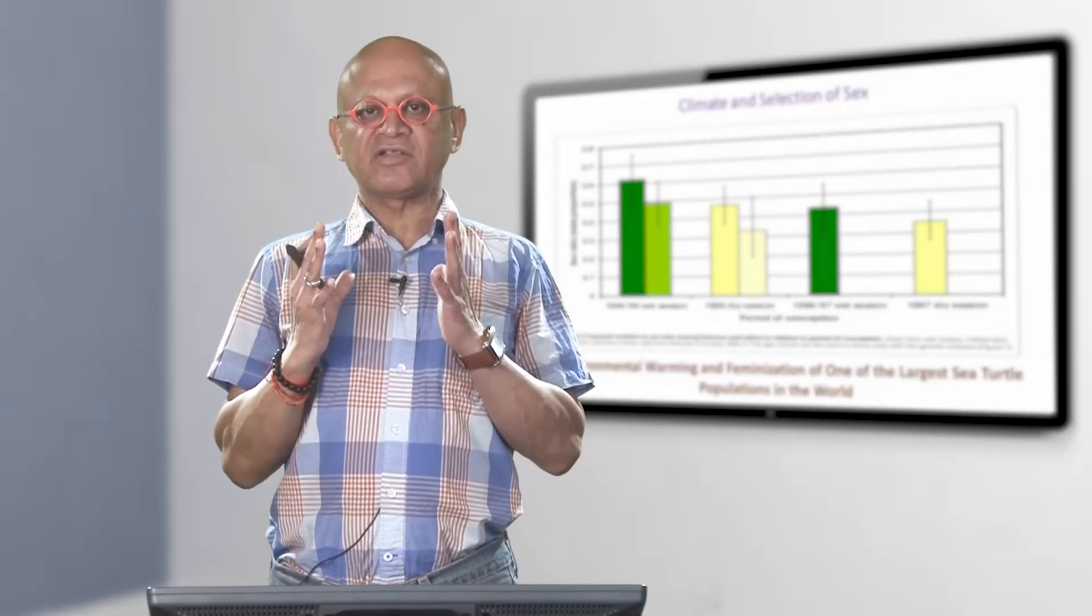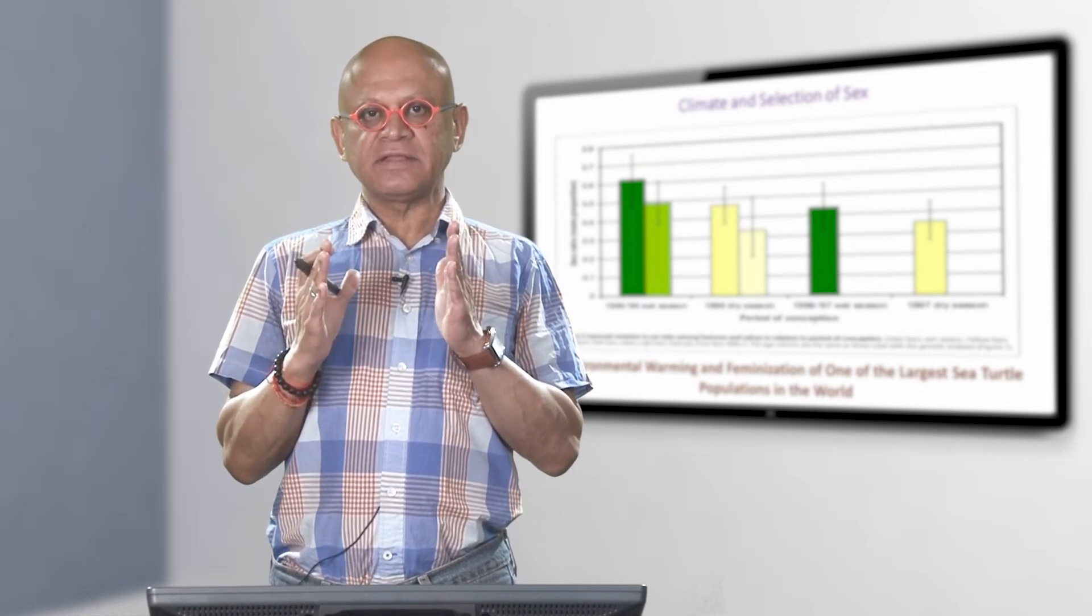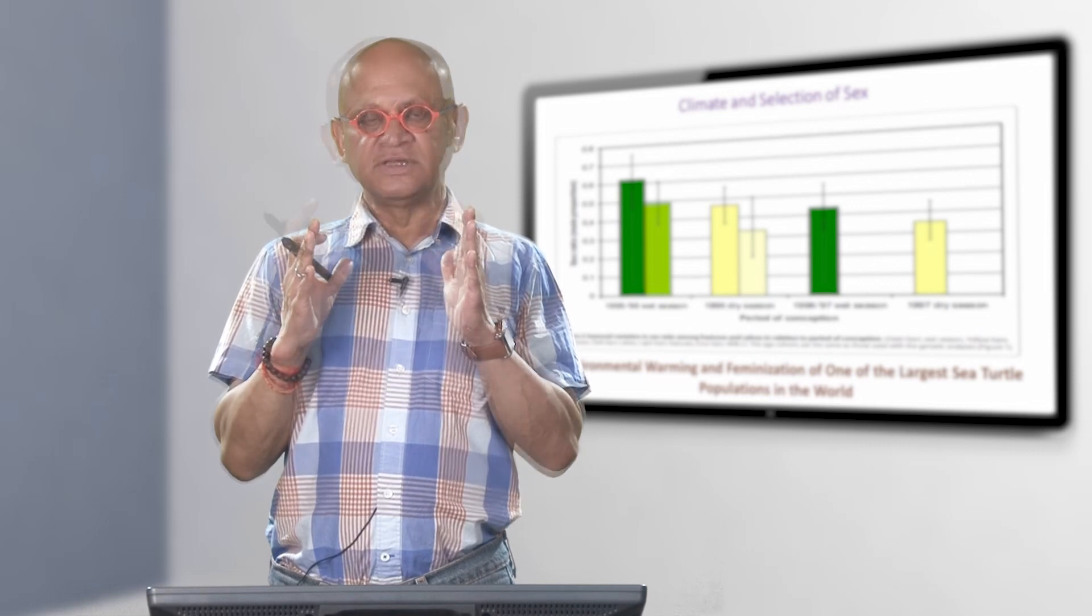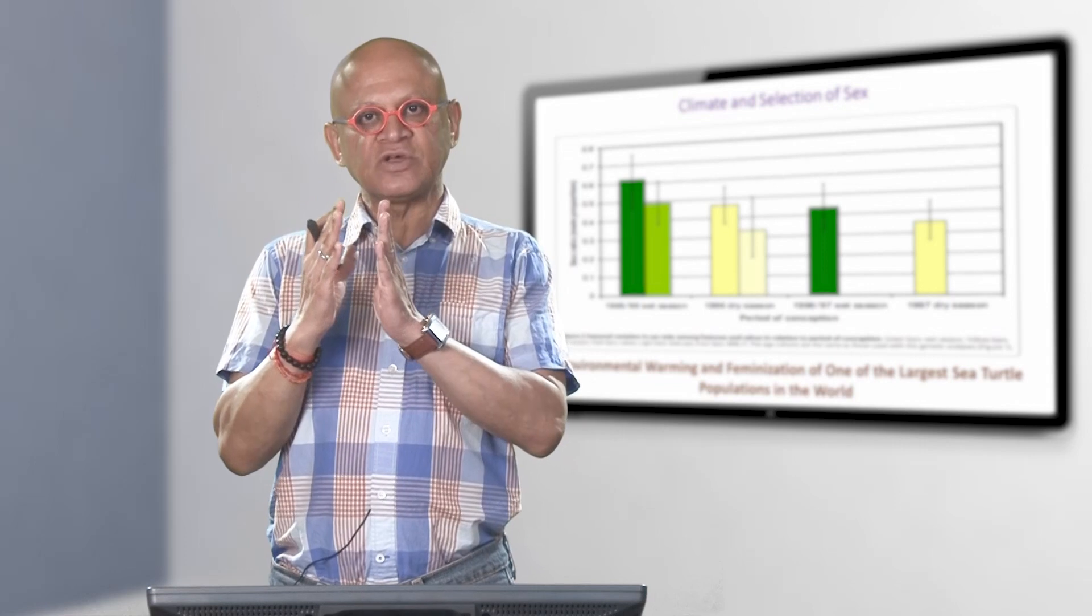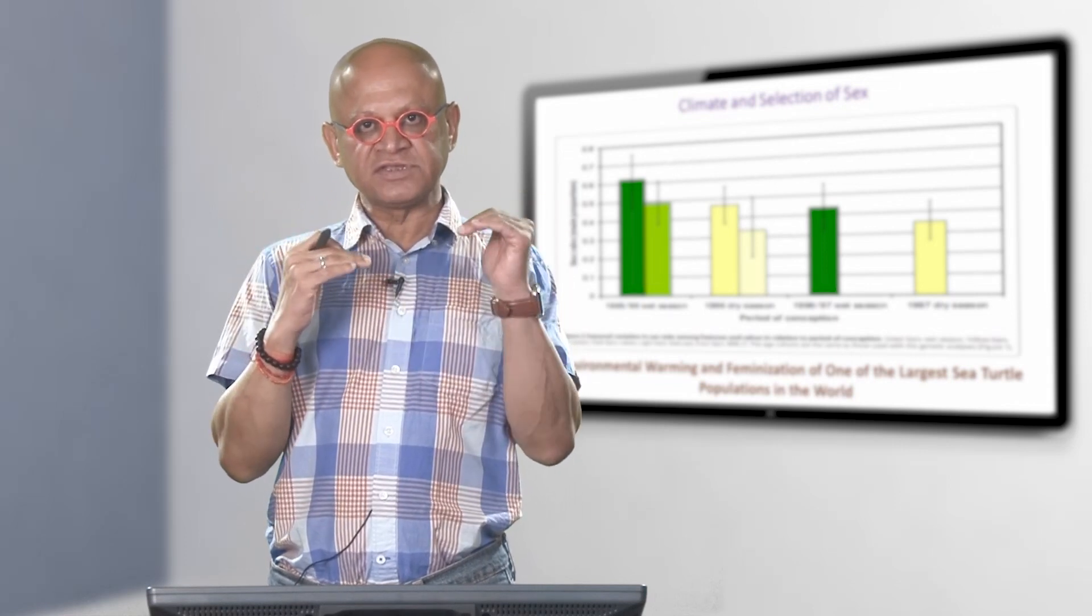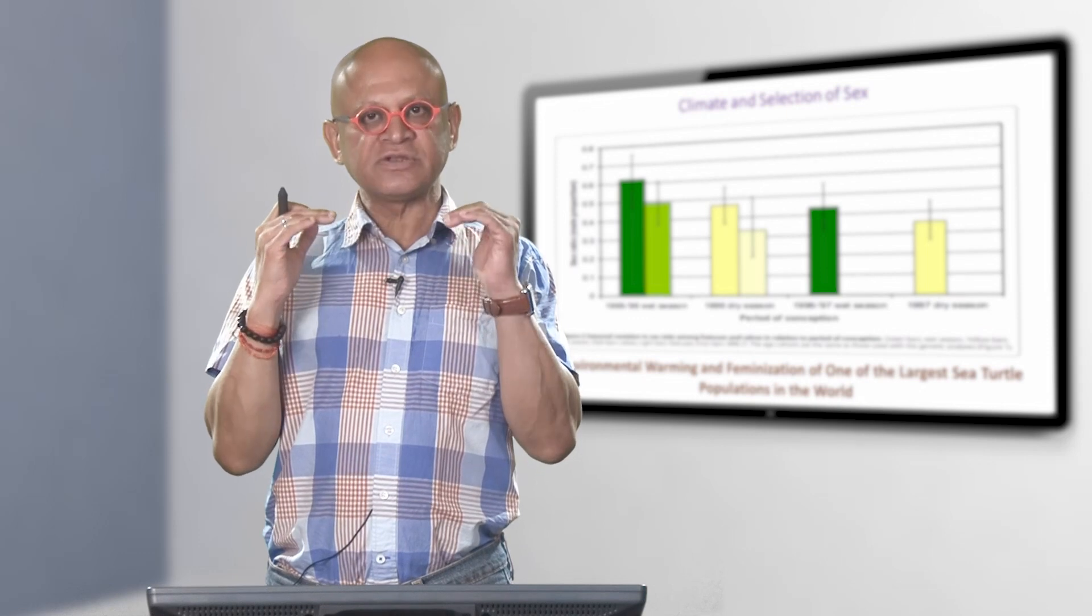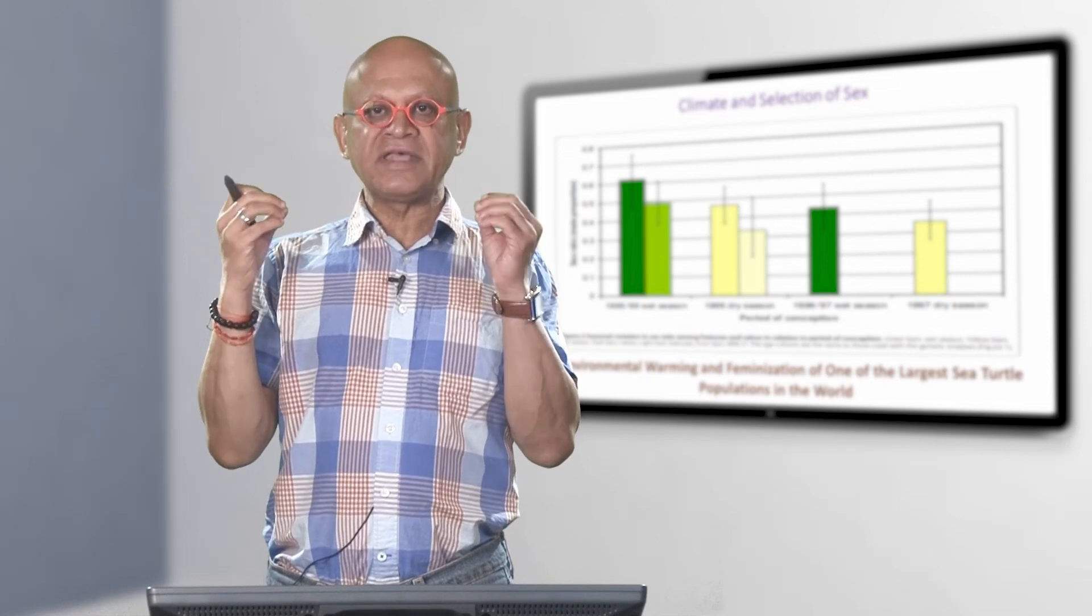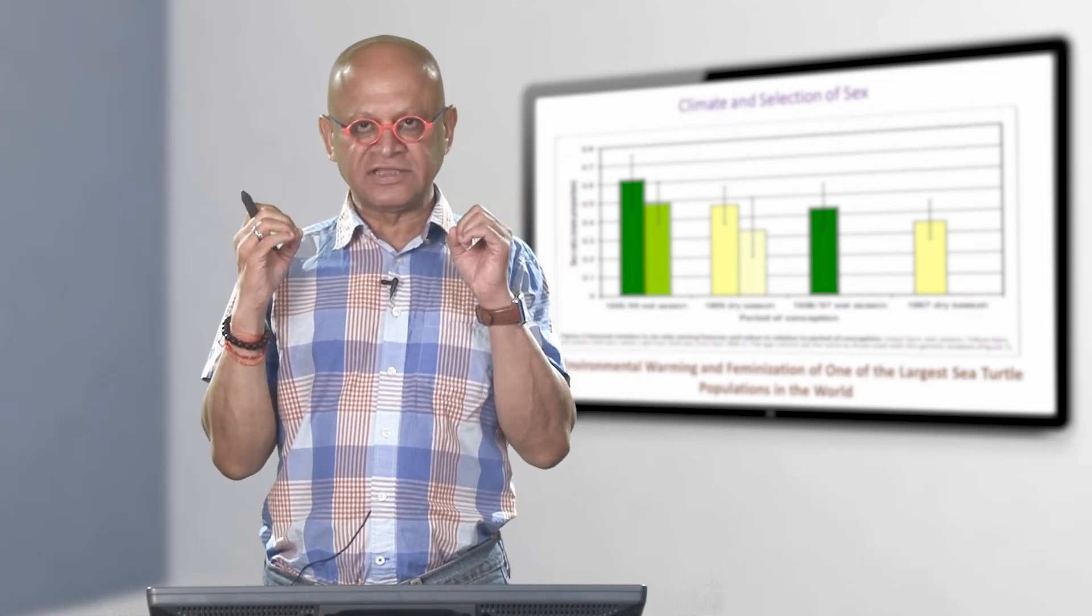When we want to understand the impact of climate on biology or biosphere, we have to remember that the very essential part of biology is the growth rate or metabolic rates and the selection of sex ratios, male versus female. It turns out that the selection of sex, whether the fetus will grow up to be a male or a female, often depends on many environmental factors like temperature, rainfall and so on.